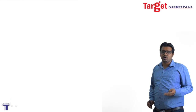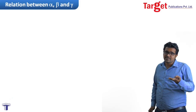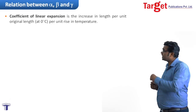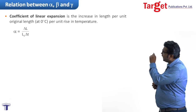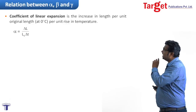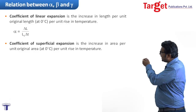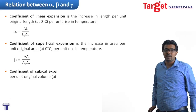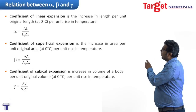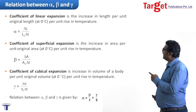Moving ahead, there is a relation between all three — alpha, beta, and gamma. Alpha is the Coefficient of Linear Expansion, defined as the increase in length per unit original length per degree rise in temperature: alpha = delta L / (L₀ delta T). Beta is the Coefficient of Area Expansion, defined as increase in area per unit original area per degree rise in temperature. Gamma is the Coefficient of Cubical Expansion, defined as increase in volume per unit original volume per degree rise in temperature. All three are related as alpha = beta/2 = gamma/3.